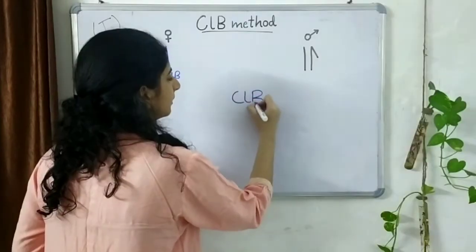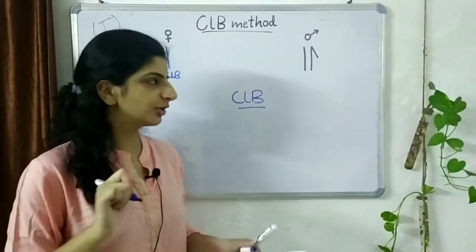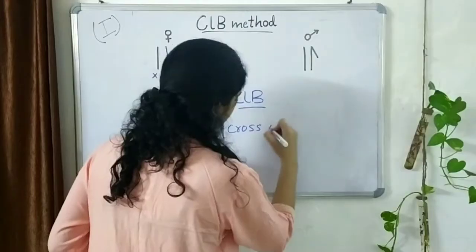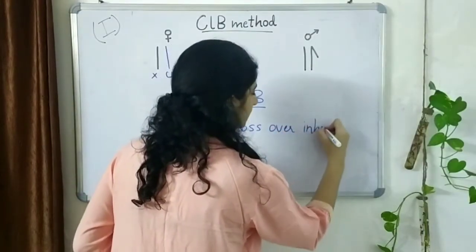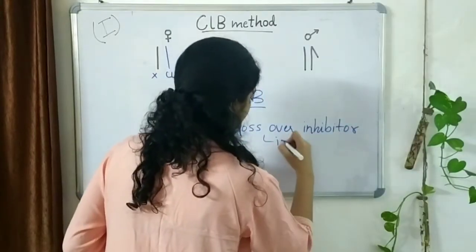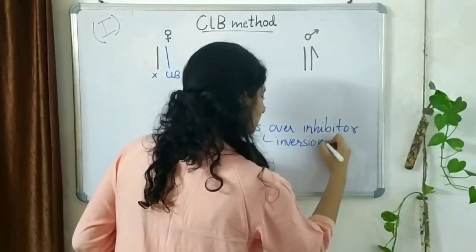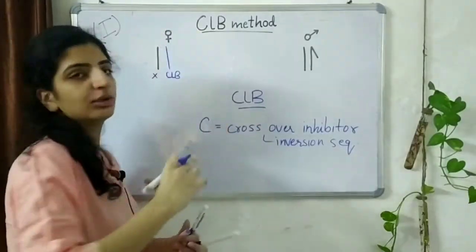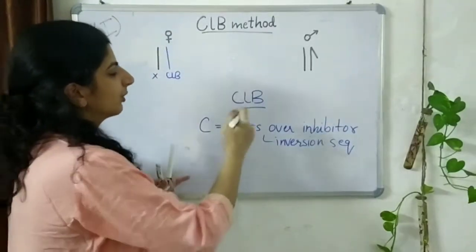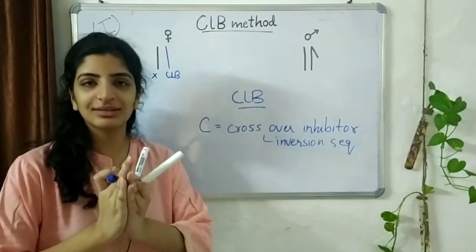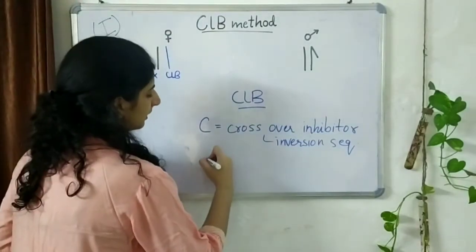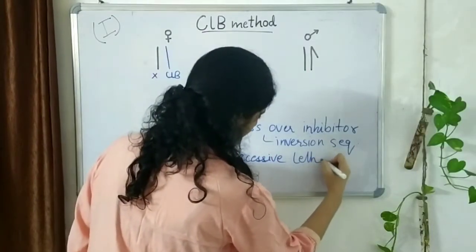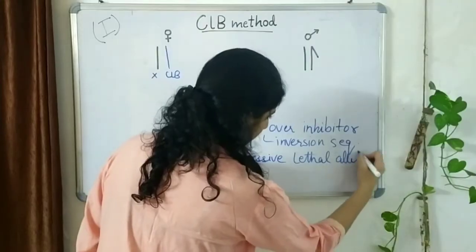The CLB is made up of three major constituents. The first one, the C, is a crossover inhibitor. This is an inversion sequence. Because of the presence of the C, our CLB chromosome does not undergo crossover and therefore it is ensured that the C, L and B stay together during the entire experiment. The L is that recessive lethal allele.